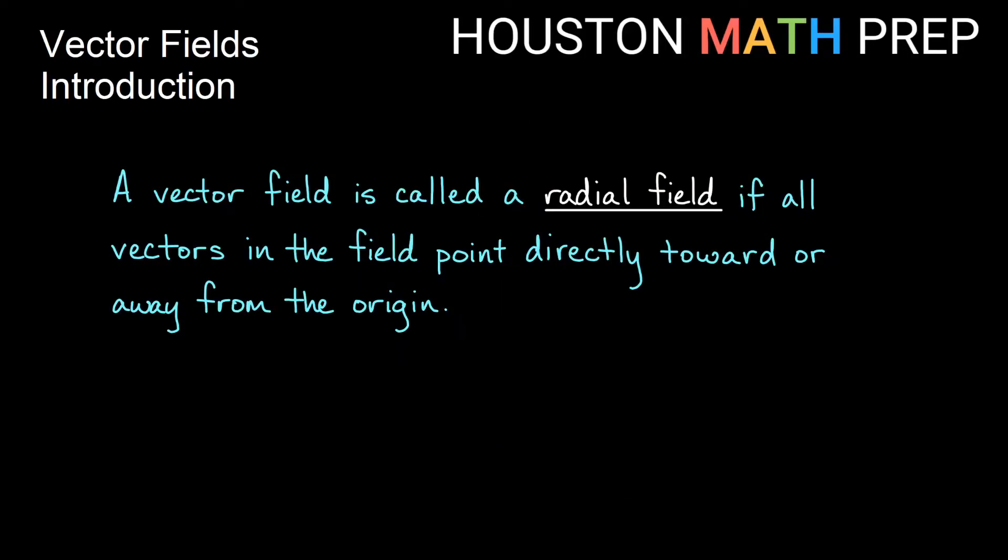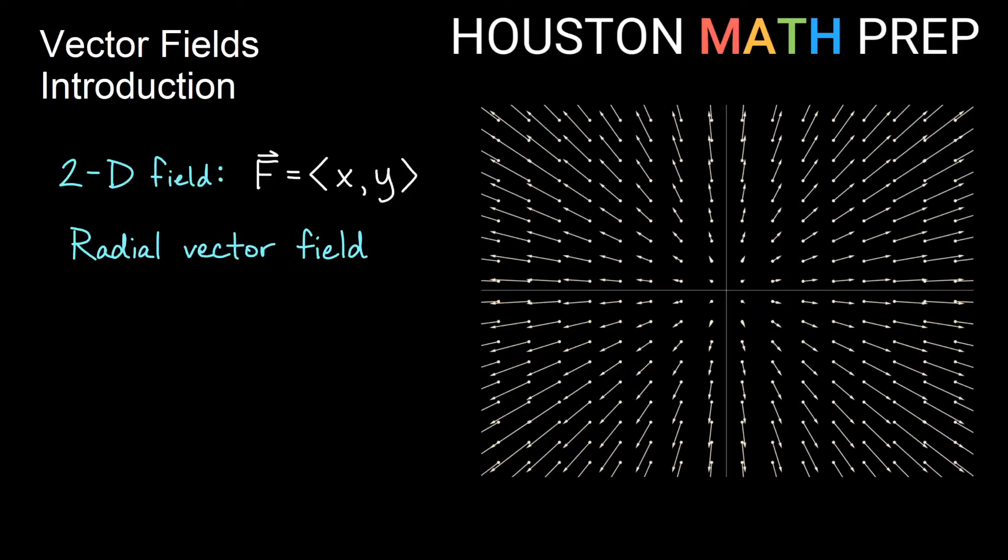Just getting familiar with a couple kinds of vector fields. So a vector field is called a radial field if all the vectors in the field point directly toward or away from the origin. You can see here I have my 2D vector field, <x, y>, so the formula for each vector is the x coordinate comma the y coordinate, and if you see here this picture, this is a radial vector field because all of the vectors are pointing away from the origin in this field.